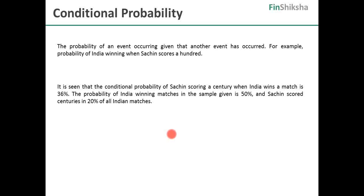Let's now start thinking about conditional probability and one of the cornerstones of understanding how we go about looking at it. There are lots of formulae given, but I would urge you to just forget the formulae as we go along. We will try and solve this entire bit without touching any formula. The probability of an event occurring given that another event has occurred is known as conditional probability. For example, the probability of India winning when Sachin scores 100 is a kind of conditional probability.